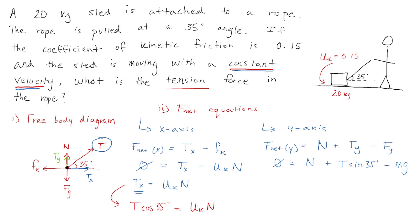Now looking at this equation, we have the mass of the sled. We know the acceleration due to gravity. We're solving for the tension T, but we're missing the normal force. So how do we solve for the normal force? Well, look back at our F net x equation. If we rearrange it, we can see that the normal force is equal to T cos 35 degrees divided by mu K. That means we can take this value for the normal force and plug it in to our F net y equation. And then the only unknown variable will be the tension force, which is what we want to solve for.